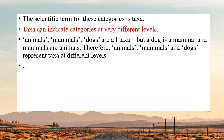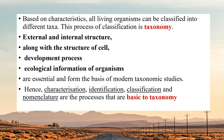The most important statement of this entire video: taxa can indicate categories at very different levels. Dogs are one level, dogs are mammals, and mammals are animals — so dogs is a taxa, mammals is a taxa, and animals is a taxa. All three are categories, each containing different things within them. Based on characteristics, all living organisms can be classified into different taxa, and this process of classification is known as taxonomy.